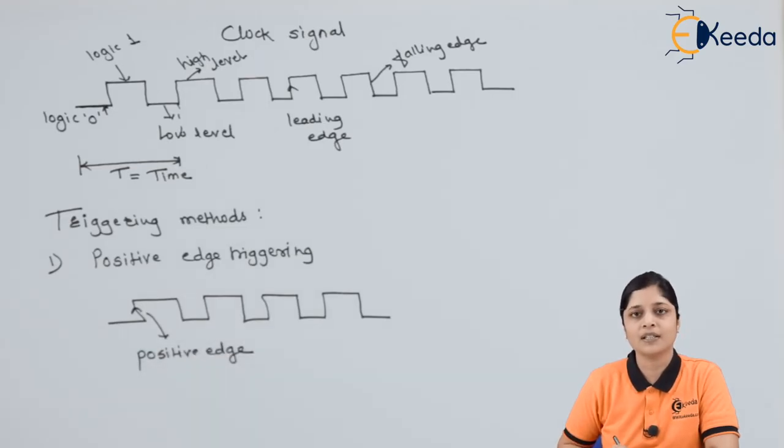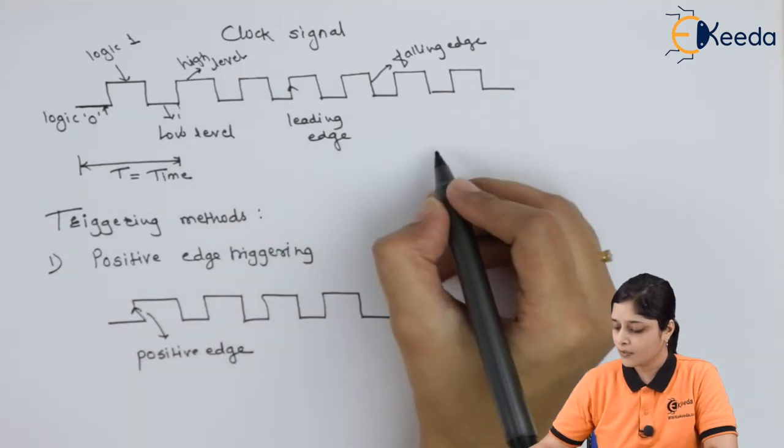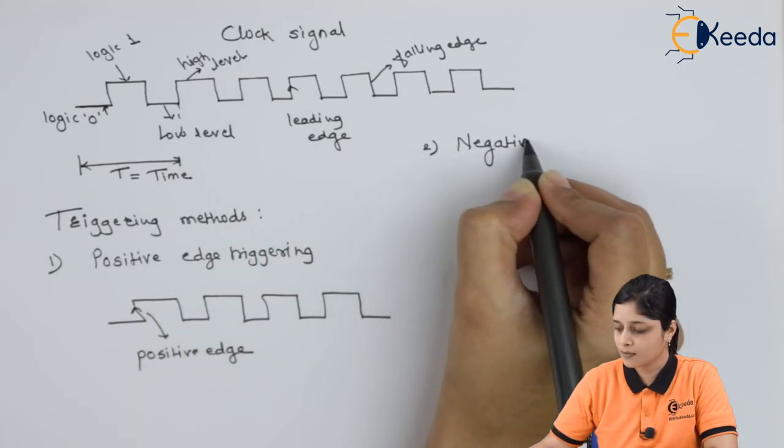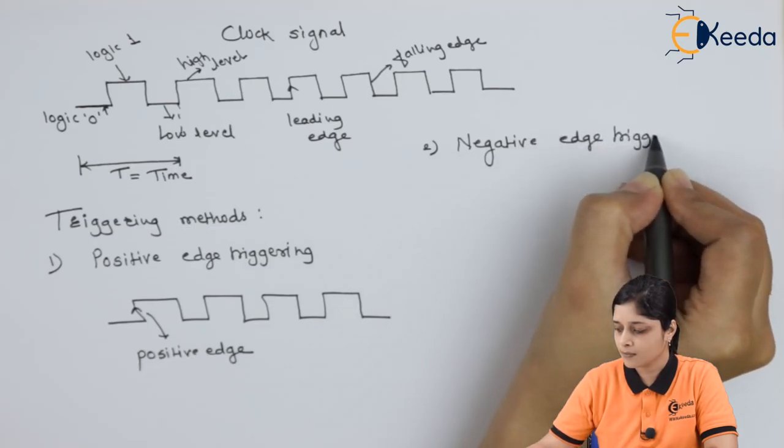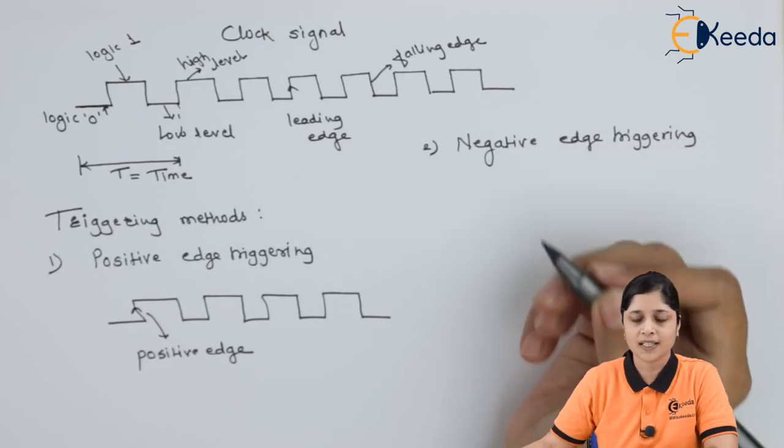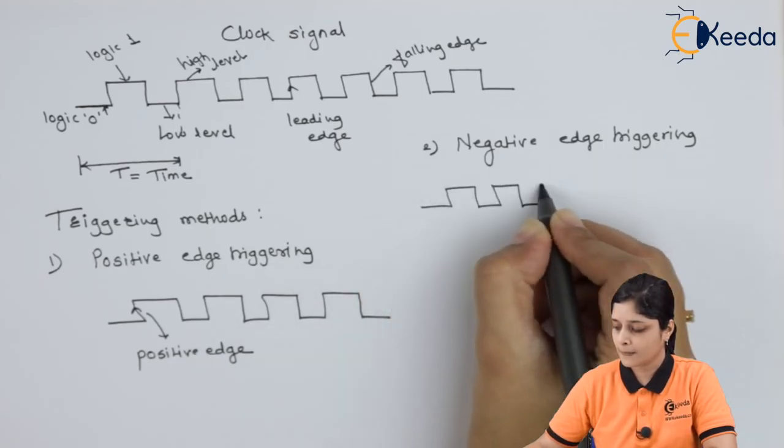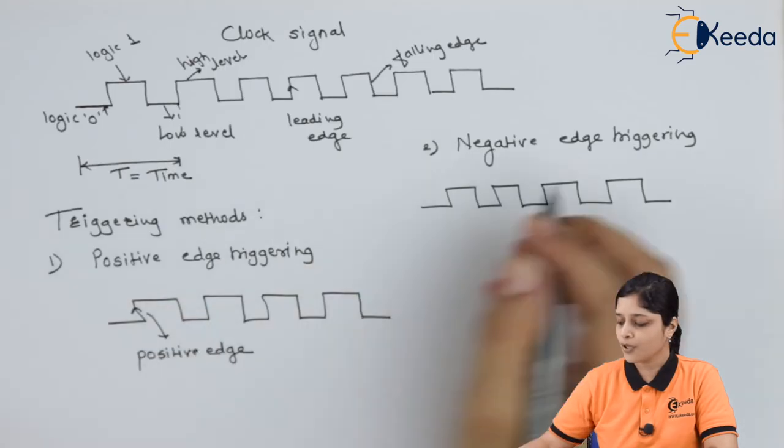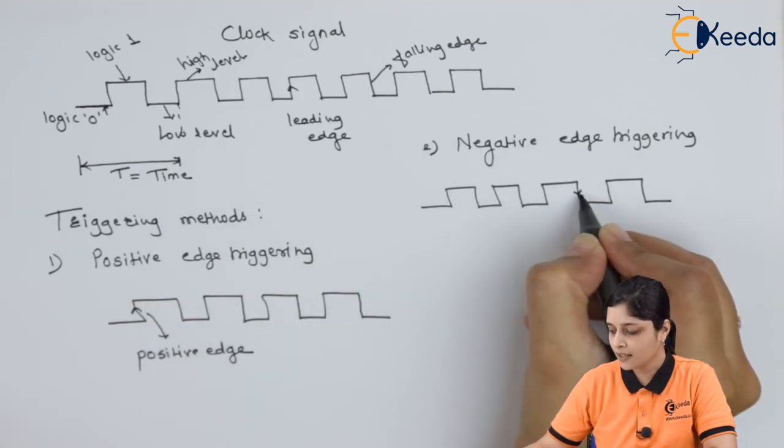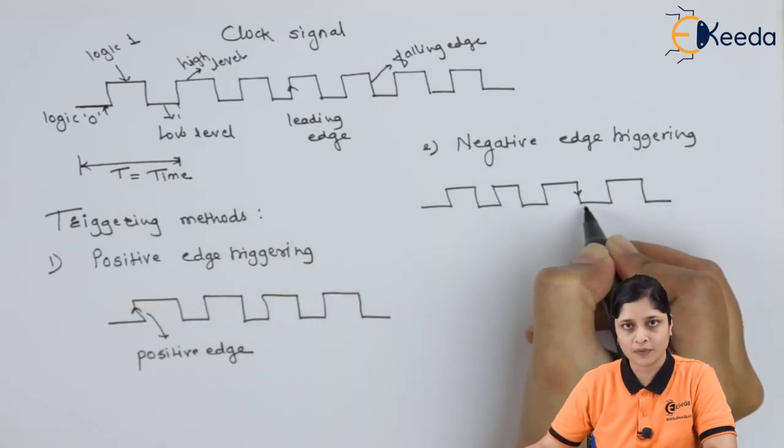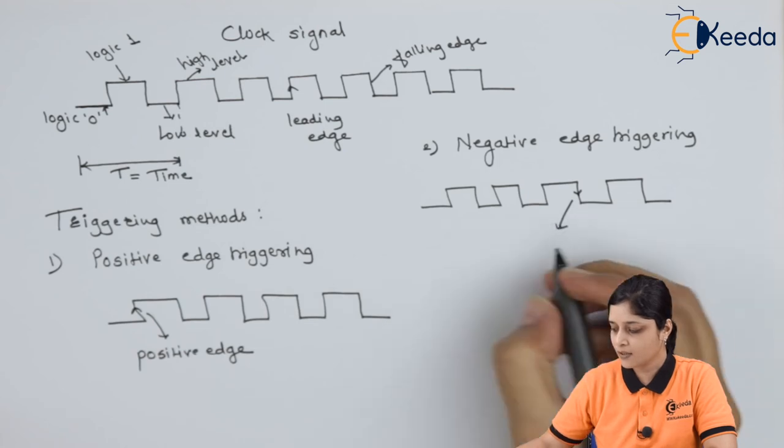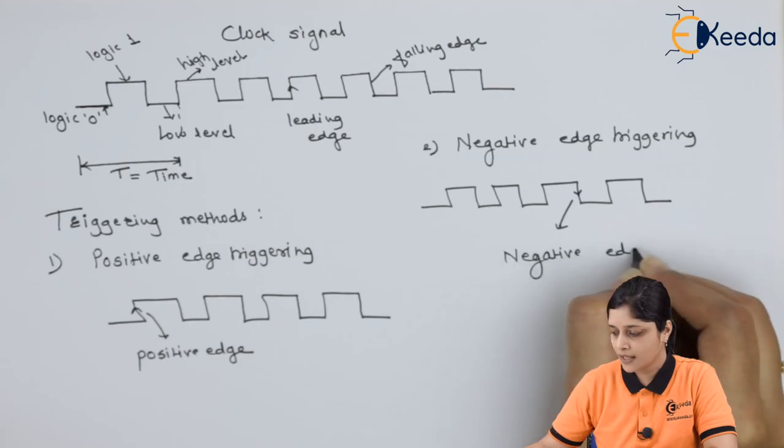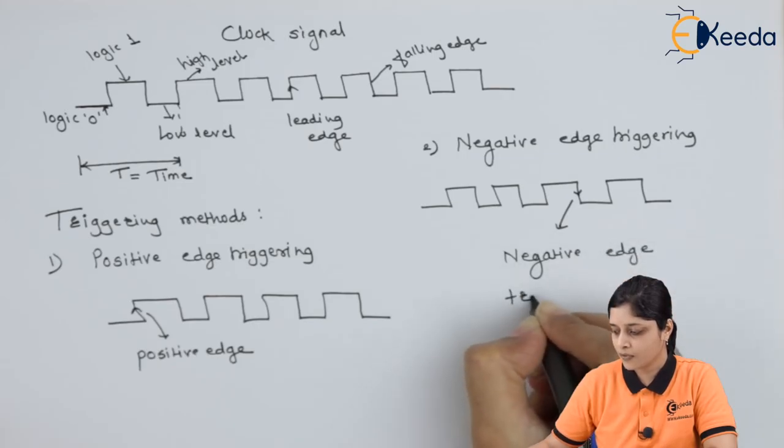And what is negative edge triggering? We will see negative edge triggering here. Again, you have to draw the clock signal. Now, for negative edge triggering, you should have first of all the high level, and it should go towards the low level. This triggering is called negative edge triggering.